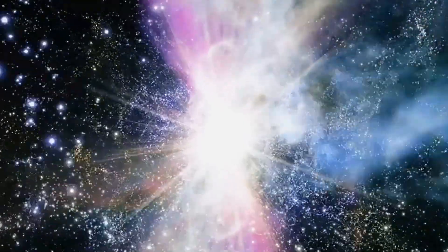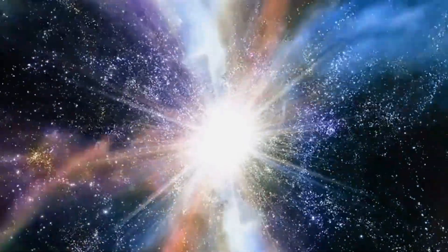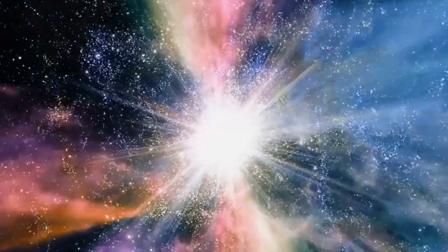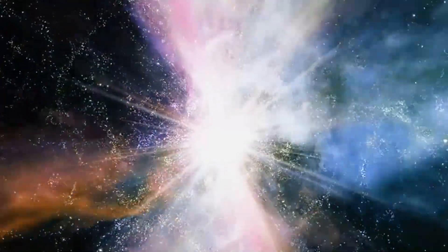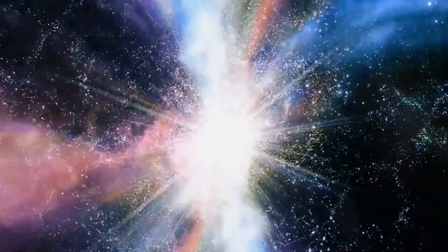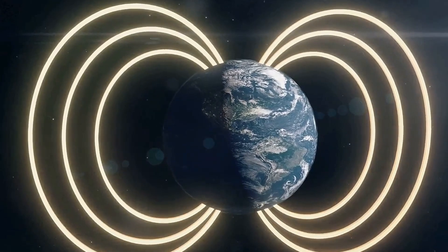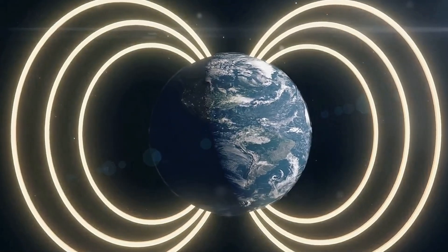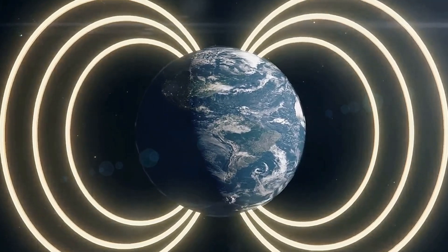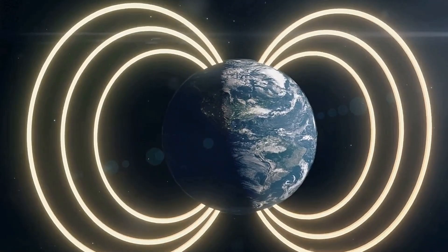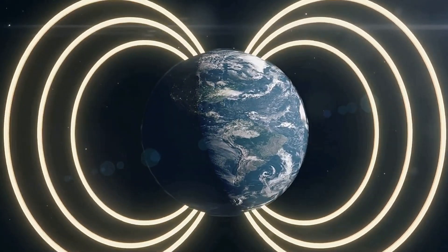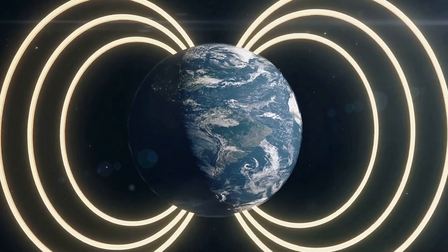These stars are the remnants of supernovae, the explosive deaths of larger stars, and their density is truly mind-boggling. Picture this, a teaspoon of a neutron star would weigh about a billion tons on Earth. Swirling around these dense cores are intense magnetic fields a million times stronger than the most powerful magnets on Earth. These fields whip up fierce storms of high-energy particles, creating bright hotspots that we can detect from our planet as pulses.